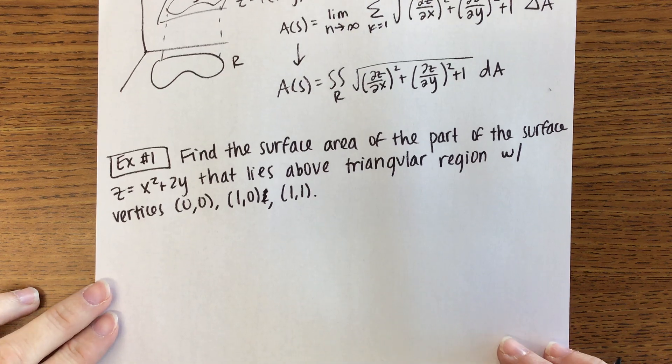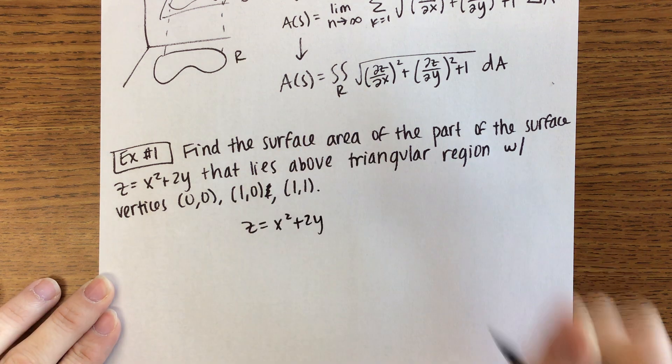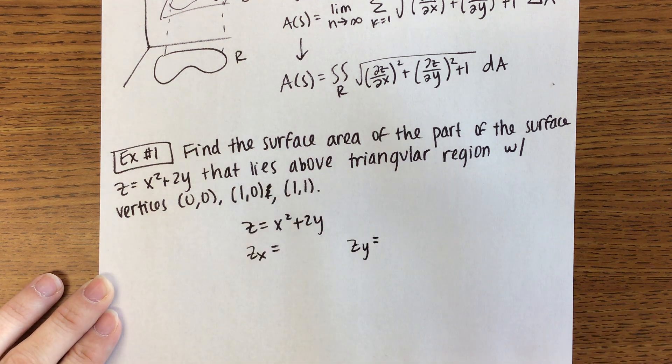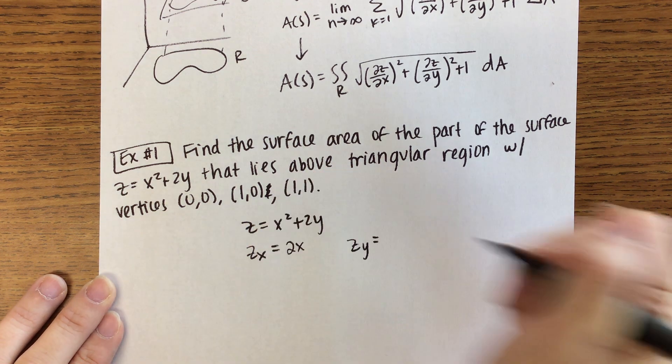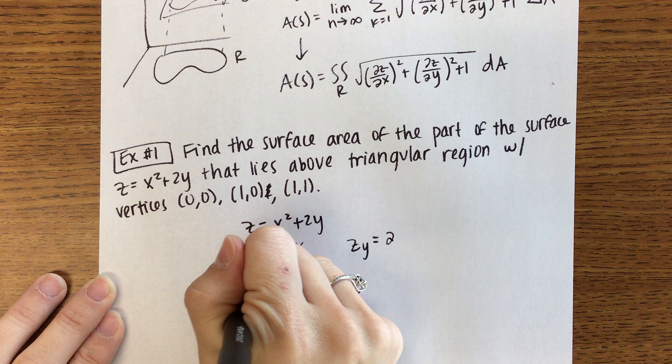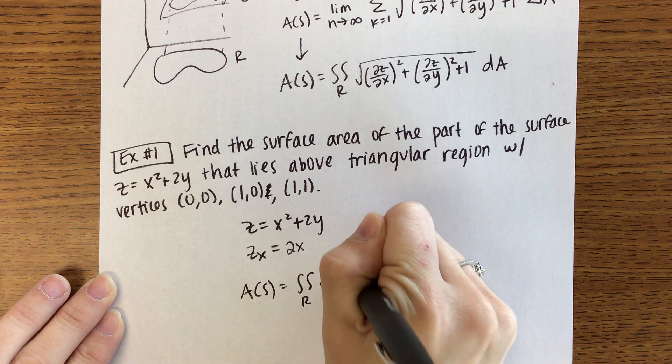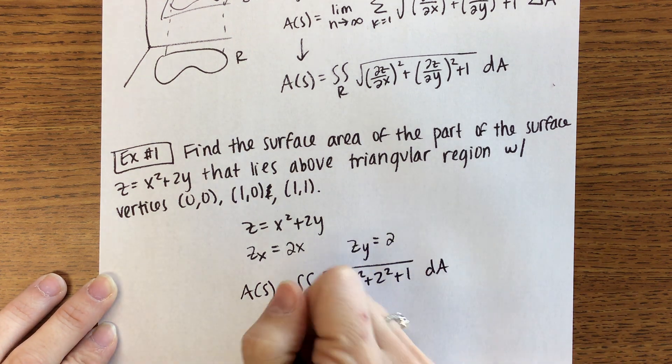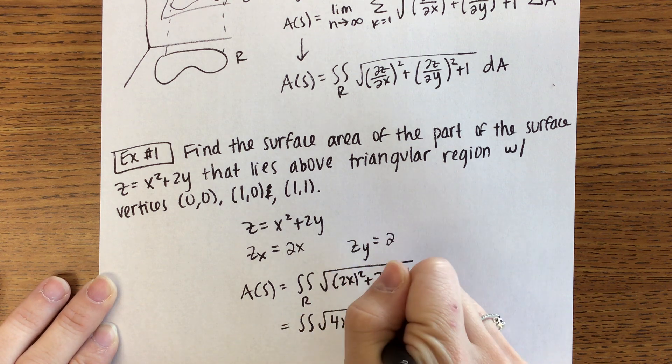Okay, so using that formula that we wrote above, our surface is Z equals X squared plus 2Y. We're going to have to take the first partial with respect to X and the first partial with respect to Y. First partial with respect to X will be 2X. First partial with respect to Y will be 2. So then the area of our surface will be the double integral over the region R square root of that 2X squared plus 2 squared plus 1 DA, which will be the double integral of 4X squared plus 5 DA over the region R.